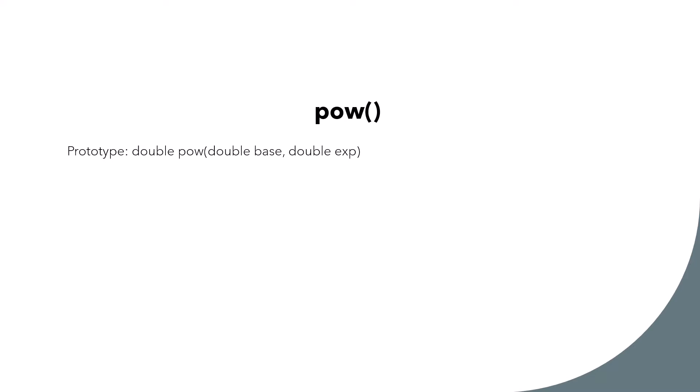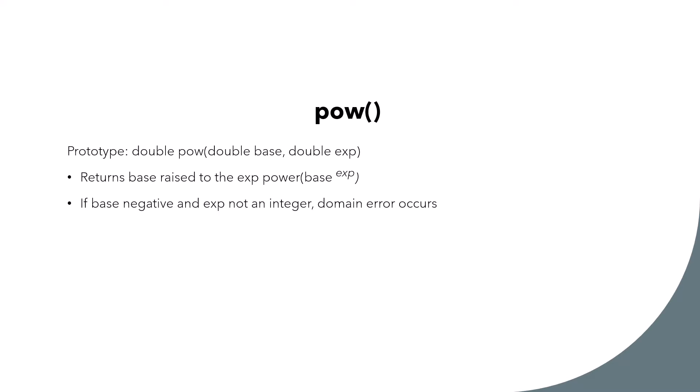Moving on to pow. We've used this function before but we're revisiting it to understand the inner workings and error handling. From the prototype, it returns a double and takes two arguments: double base and double exp. It returns base raised to the exp power. If base is negative and exp is not an integer, a domain error occurs. Overflow results in a range error.